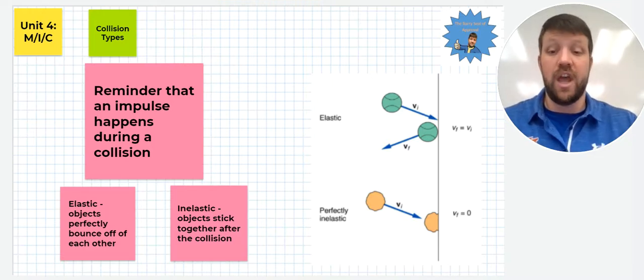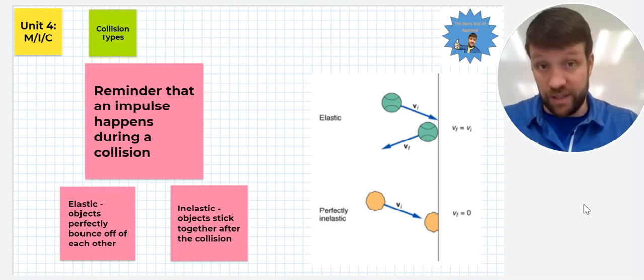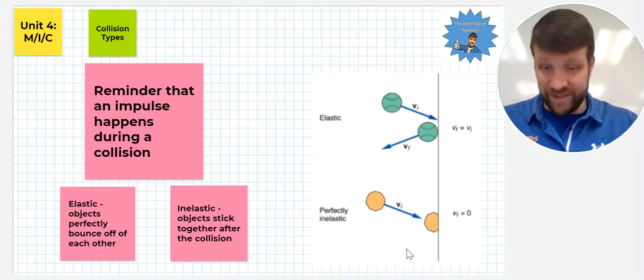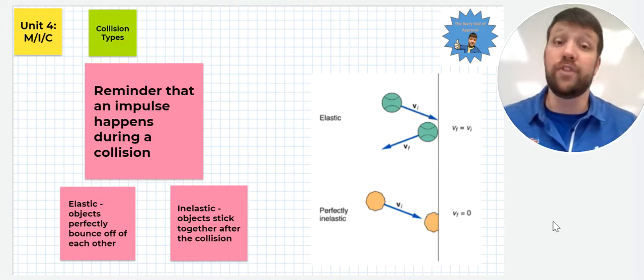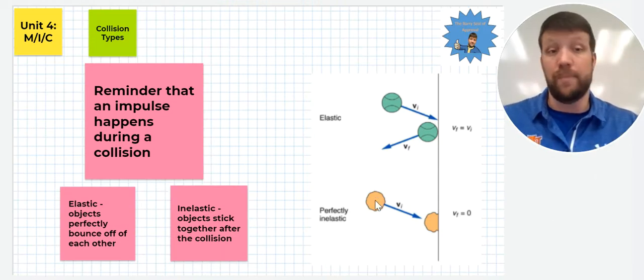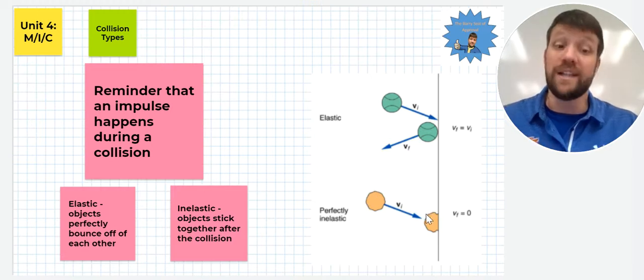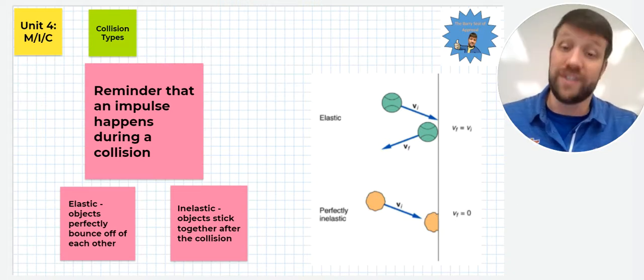First, we have elastic objects that perfectly bounce off each other. We see an example of an elastic object, a tennis ball coming into the wall, bouncing back out. It has the same velocity in and out because we have a perfectly elastic collision. An inelastic collision is when two objects stick together and then travel as one. In the case here of a clay object or a piece of Play-Doh being thrown at a wall, it's going to stick, and there's no final velocity because the wall is immobile.